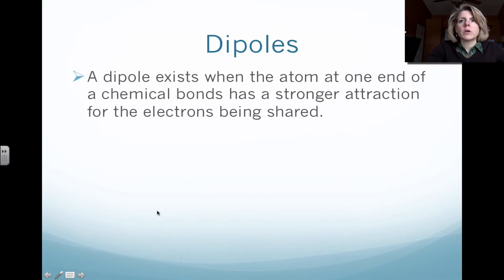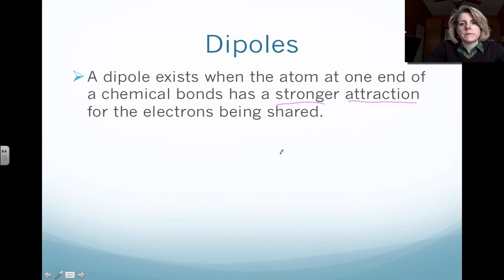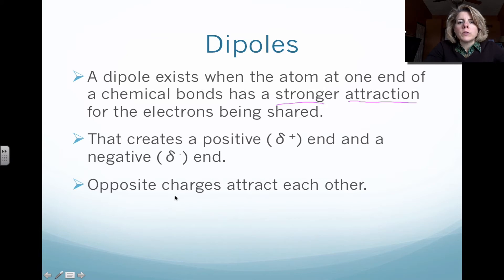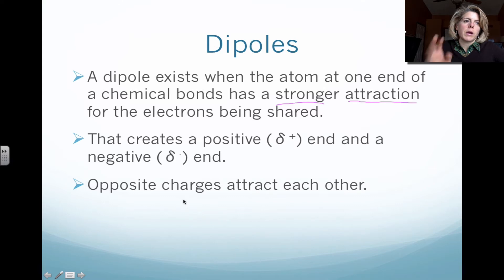For a dipole, you have to have a covalent bond. In that covalent bond, the electrons start having a stronger attraction to one of the atoms. You'll see a Greek delta symbol — one atom will have a slightly positive charge and the other atom will have a slightly negative charge. You need to have two or more molecules in order for this to happen. It's not one molecule within itself; you need two different molecules, each with a dipole.